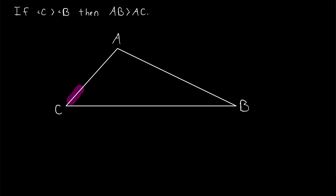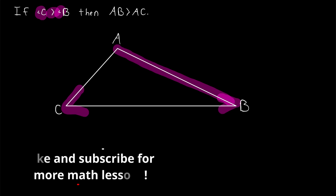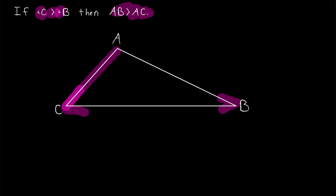In a triangle, if one angle is greater than another, then the side opposite the greater angle is longer than the side opposite the shorter angle. And that's what we'll be proving in today's lesson.